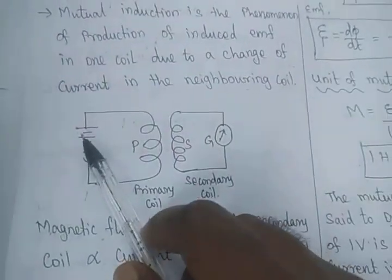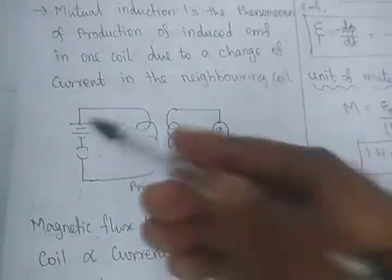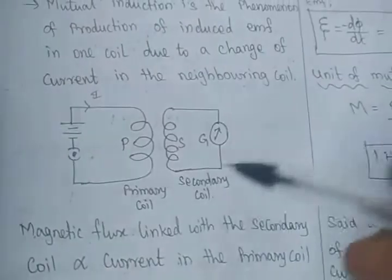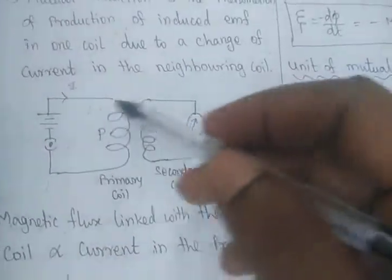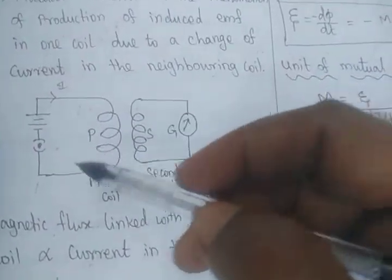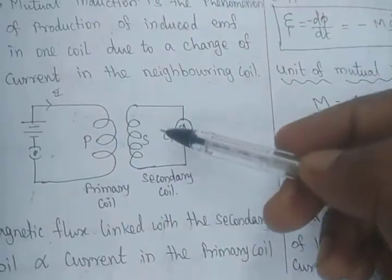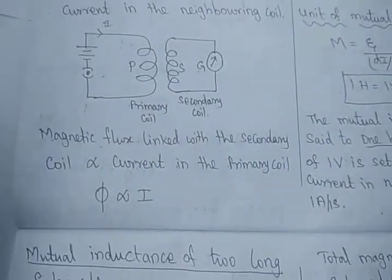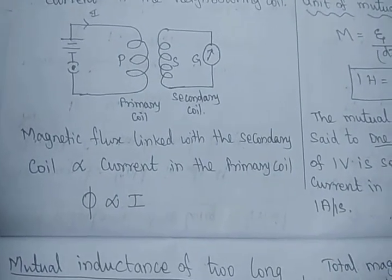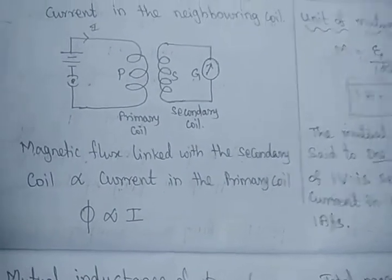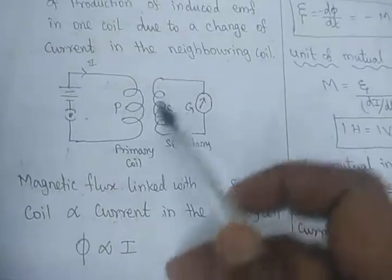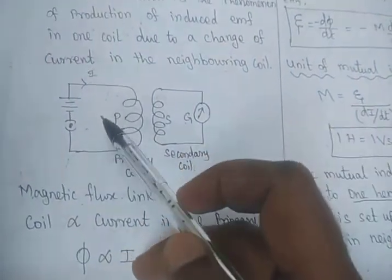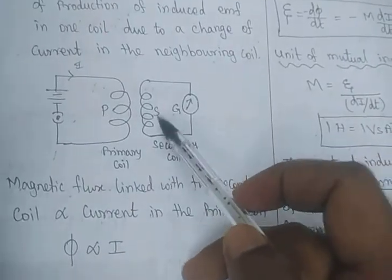Consider a battery. When the battery is switched on, current I flows in one direction — that is a change in current. So there will be a change in magnetic flux. This change in magnetic flux induces current in the secondary coil. The flux linked with the secondary coil is directly proportional to the current in the primary coil. Due to this current, the flux changes.